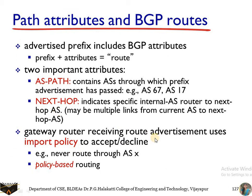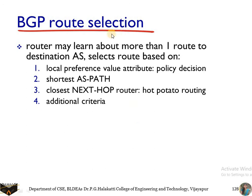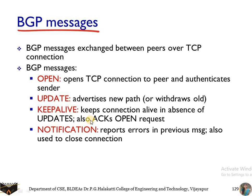A gateway router receiving a route advertisement uses import policy to accept or decline the advertisement from neighboring links. For example, a route may or may not be allowed to pass through a particular autonomous system — everything works on the basis of policy-based routing. BGP selects paths using four methods: local preference value, shortest AS path attribute, closest next-hop router (hot potato routing), or some additional criteria.